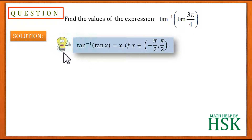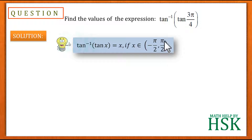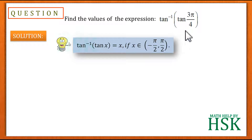To solve this question we should know the result: tan⁻¹(tan x) = x, if x belongs to the open interval (-π/2, π/2). This means we can write tan⁻¹(tan θ) = θ only if that angle belongs to the interval (-π/2, π/2). Since 3π/4 does not belong to this interval, we will have to simplify.